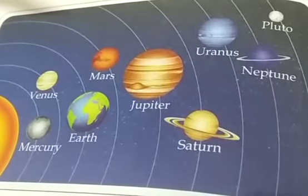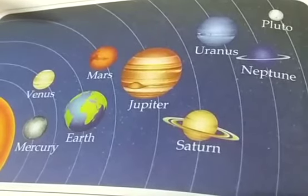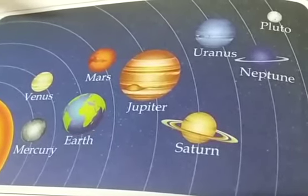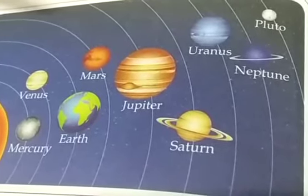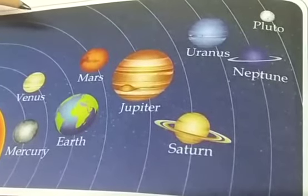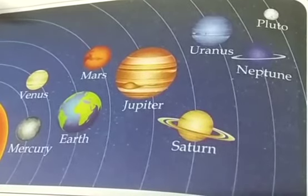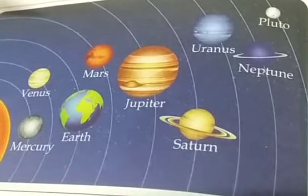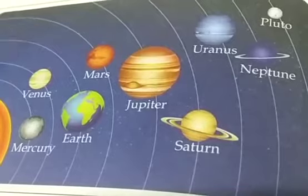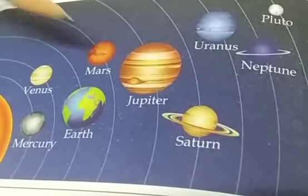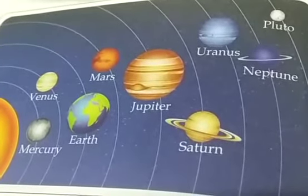Earth is part of the solar system, which is a part of the Milky Way galaxy, or Akash Ganga. Akash Ganga we say in Hindi; Milky Way galaxy we say in English. A galaxy is made up of billions of stars, planets, gas and dust. There are billions of galaxies in the universe — not only this one solar system, which is a part of the Milky Way, but plenty of galaxies like this in the universe.